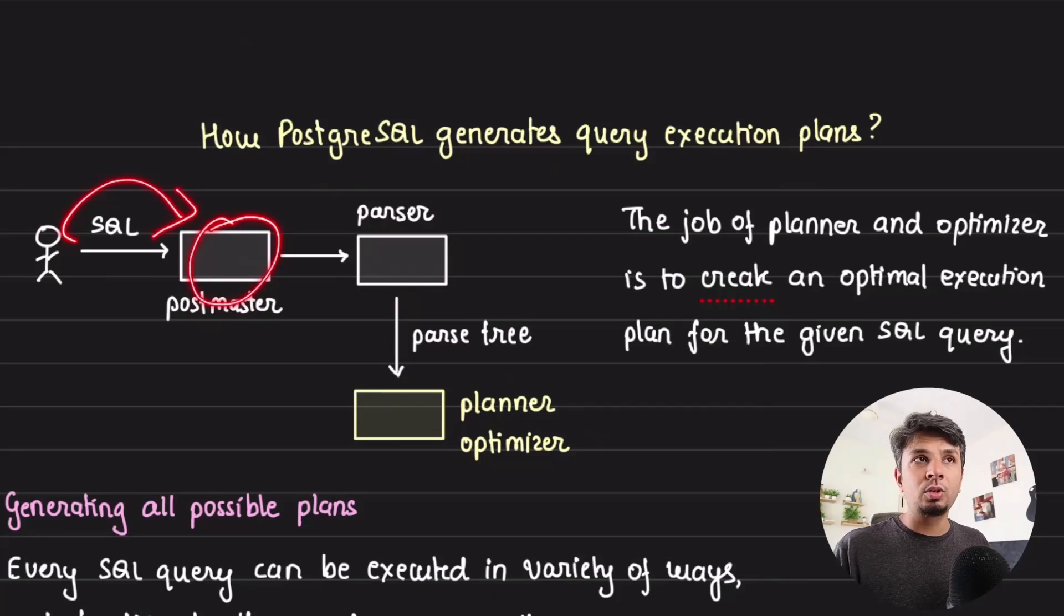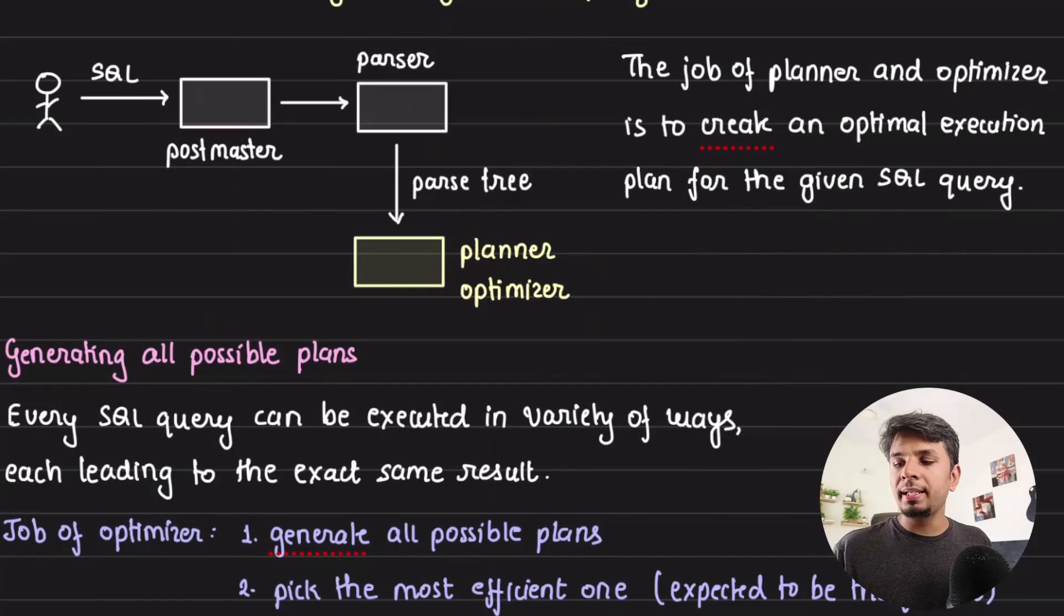Whenever Postgres receives a SQL query from the client, it parses the query, creates a parse tree and hands it off to the planner and optimizer, whose job is to create an optimal query execution plan for the given SQL query.